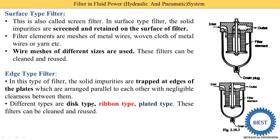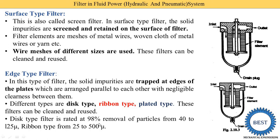Disc type filter elements are cylindrical components rated at 98% removal of particles from 40 to 125 microns. Ribbon type filters remove particles from 25 to 500 microns. So ribbon type filters handle a wider size range — up to 500 microns on the upper side and 25 microns on the lower side, compared to disc type which ranges from 40 to 125 microns.